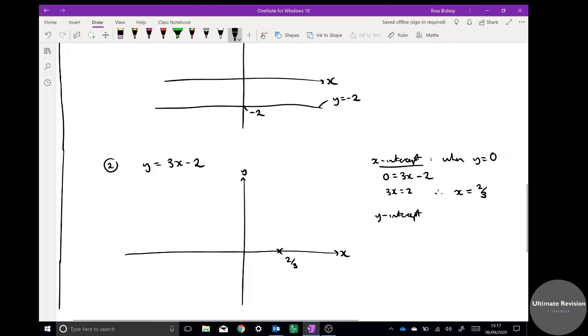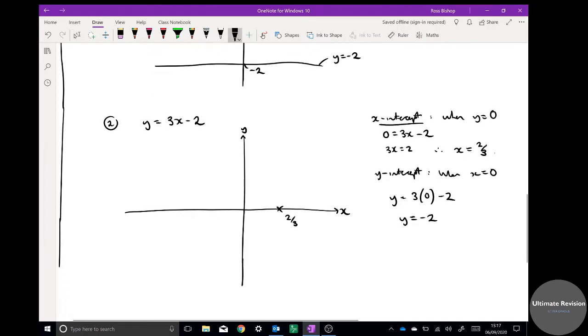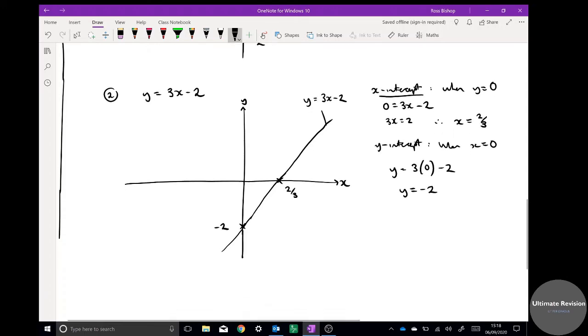That's where it crosses the x-intercept, 2 thirds. The y-intercept is when x equals 0. This is often really easy to find when it's in this form. So y equals 3 times 0 minus 2, y equals minus 2. Some of you may have noticed that anyway because it's the plus c bit in y equals mx plus c. Now I've got the two points. Again, it doesn't have to be mega to scale. I should use a ruler though, but that is pretty good for a sketch. It's got the key information: where it crosses the y and the x axis.